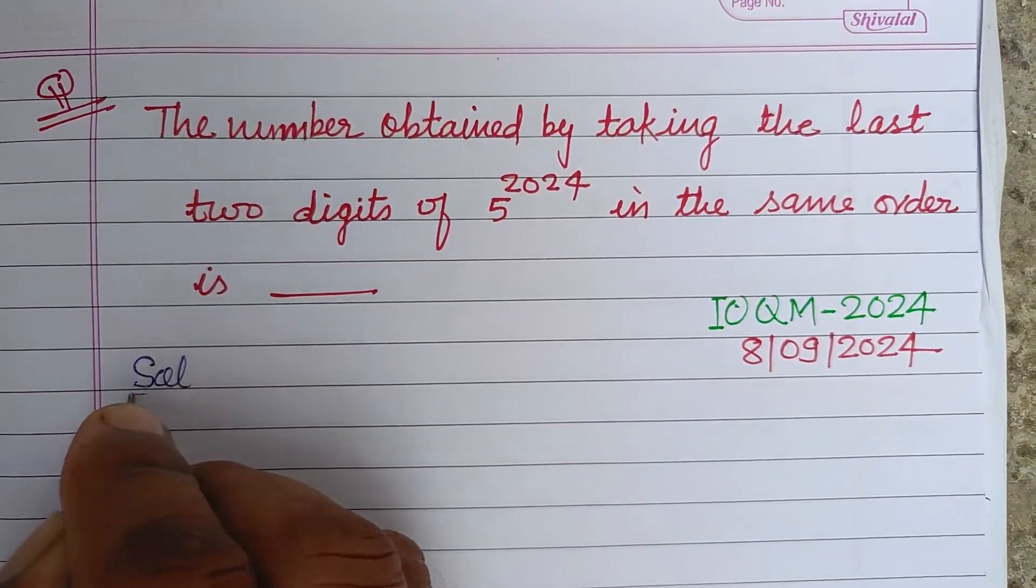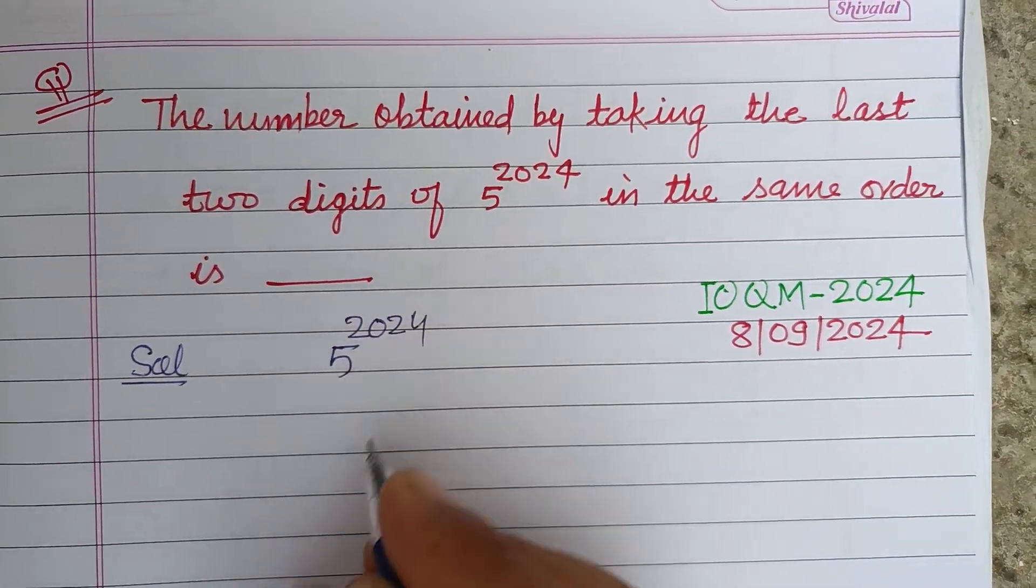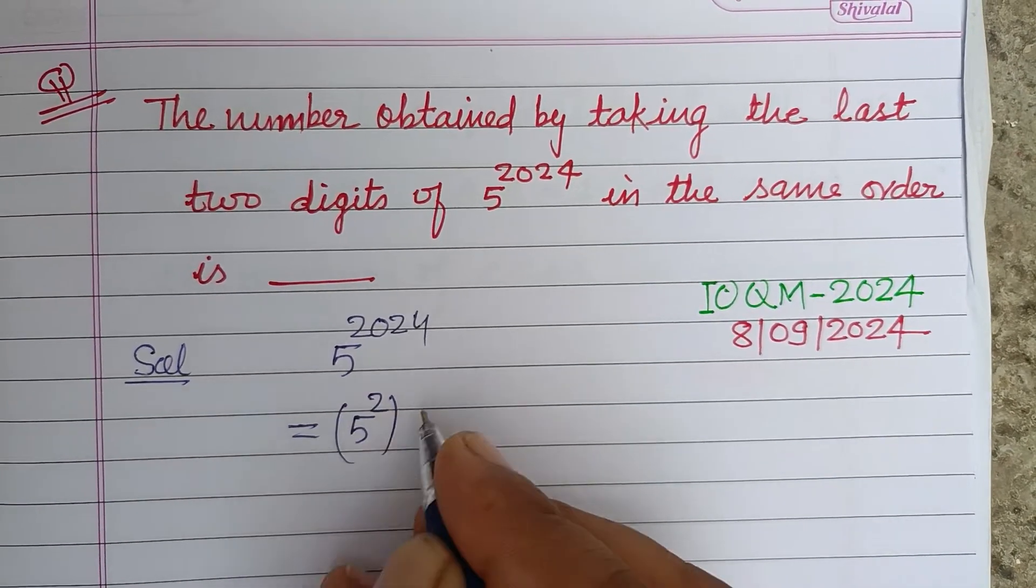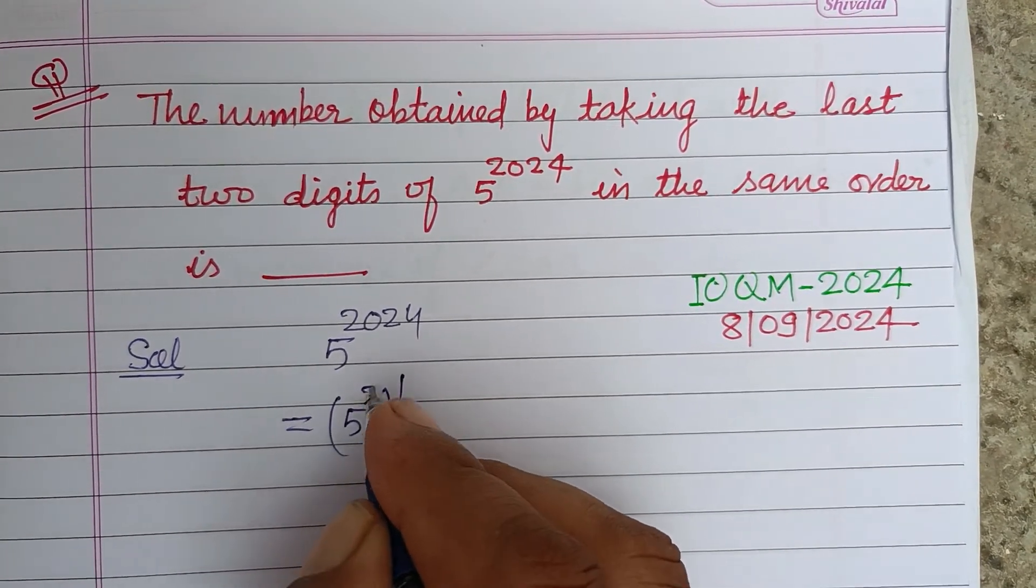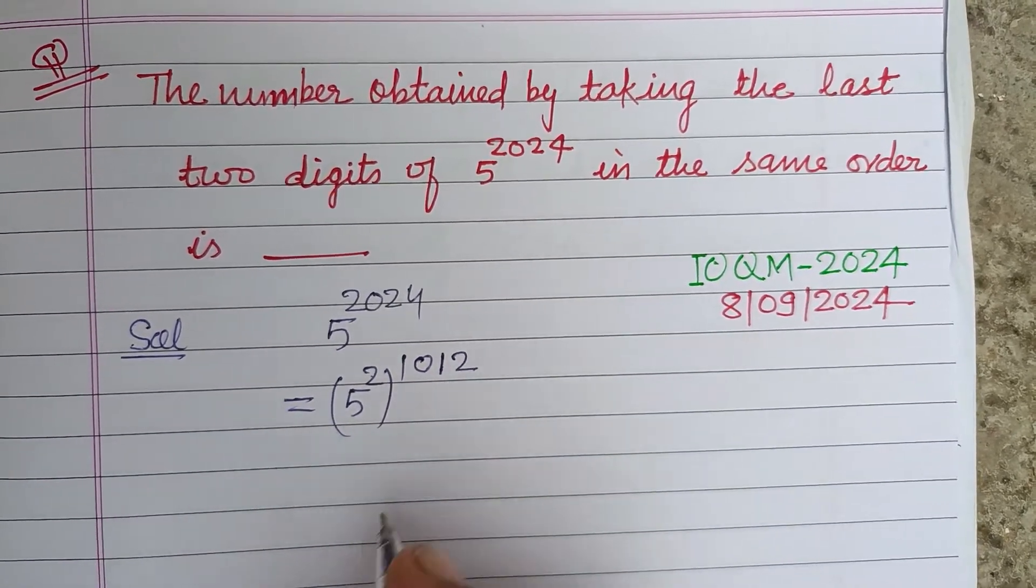So students, here it is given that 5 to the power 2024. We write it as 5 to the power 2 times 1012. This equals 5 squared to the power 1012.